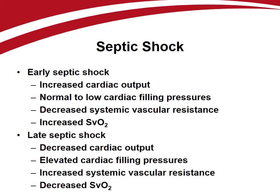Most forms of shock lead to a low cardiac output state with elevated systemic vascular resistance and reduced mixed venous oxygen saturations. Early septic shock, however, is manifested by increased cardiac output, normal to low cardiac filling pressures, decreased systemic vascular resistance, and normal to elevated mixed venous oxygen saturations as the body tries to compensate for the inflammatory or infectious insult.